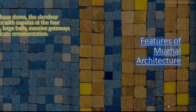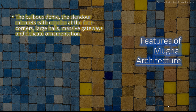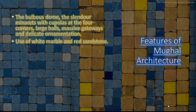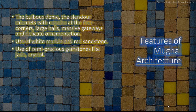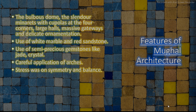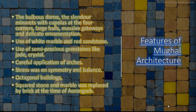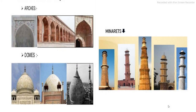Let's look at the features of Mughal architecture. There was the use of white marble and red sandstone, and semi-precious gemstones like jade crystal. There was careful application of arches, stress on symmetry and balance, and octagonal buildings were another notable feature. Squared stone and marble was replaced by brick at the time of Aurangzib. Now look at these certain models of Mughal arches, domes and minarets.